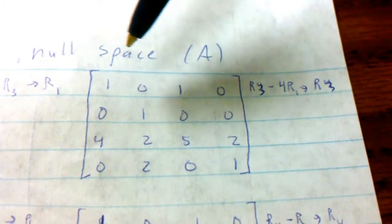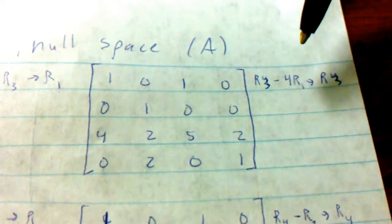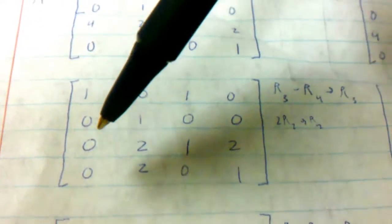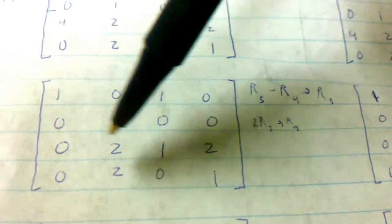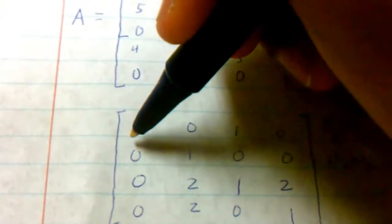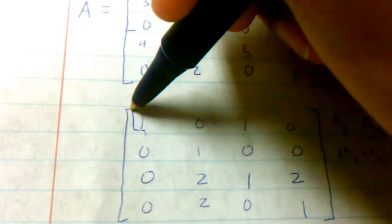Then we will do row-3 minus 4 times row-1 to give us a new row-3. And after you subtract that, this new row-3, we cleared out. So now we have, for this first one, we have our first pivotal point right here. 1, all the ones below are 0.